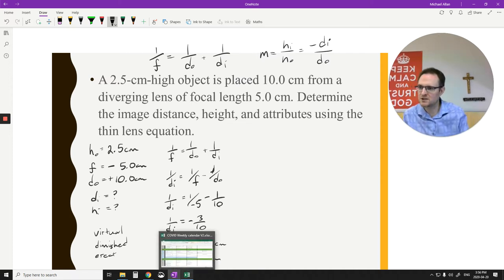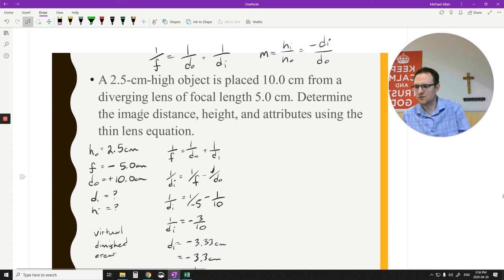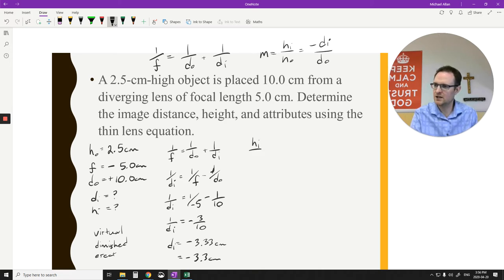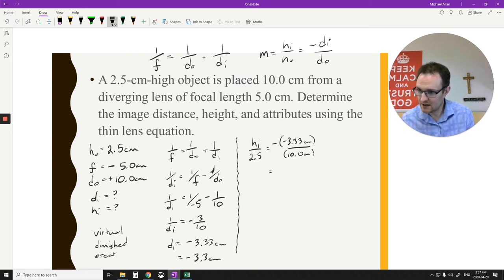So we know the image distance, negative 3.3 centimeters. I want to know the height of this now, so I'm going to use the magnification formula here, hi over ho, which is 2.5. That's equal to negative di, which is negative 3.33 centimeters, over do, which is 10 centimeters. Negative negative makes this a positive number, so I'm going to divide that by 10, multiply by 2.5, and I get hi of 0.83 centimeters. Notice it's positive.